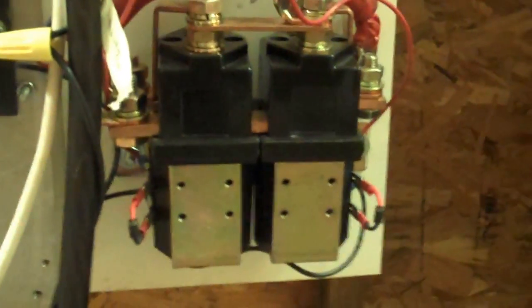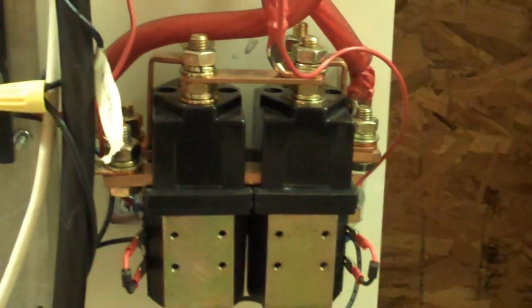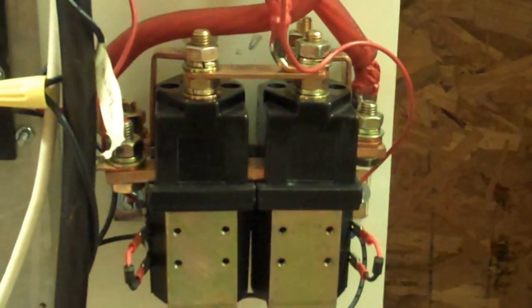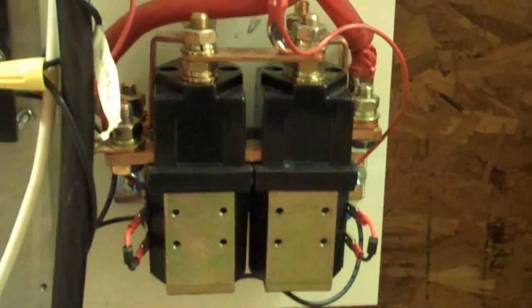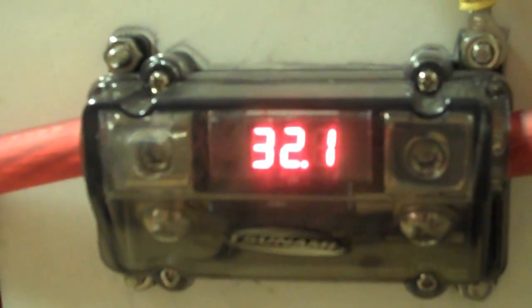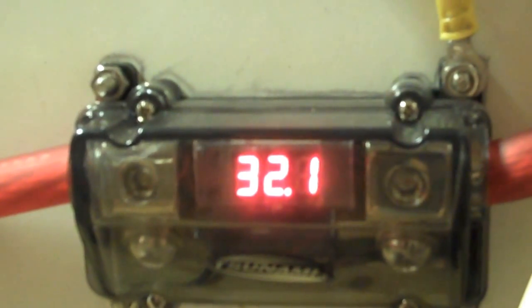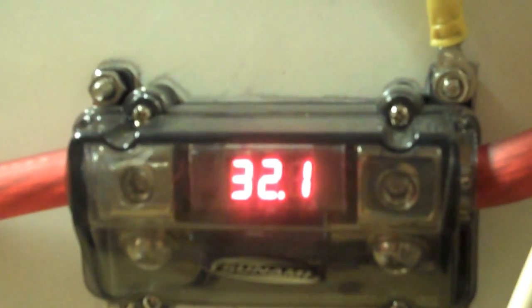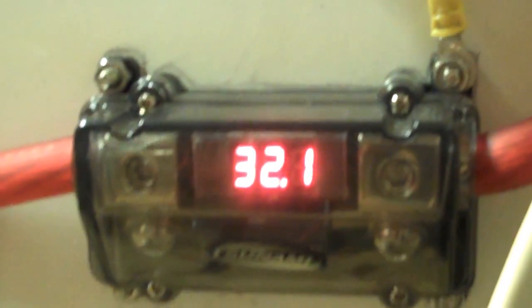Directions for all this—if you look up the Curtis 1205 controller, it'll give you the complete diagram on how to wire this up. That little guy right there is my main fuse, and she's showing 32.1 volts. I haven't charged her up yet. I was playing with it yesterday, so I ran it down.